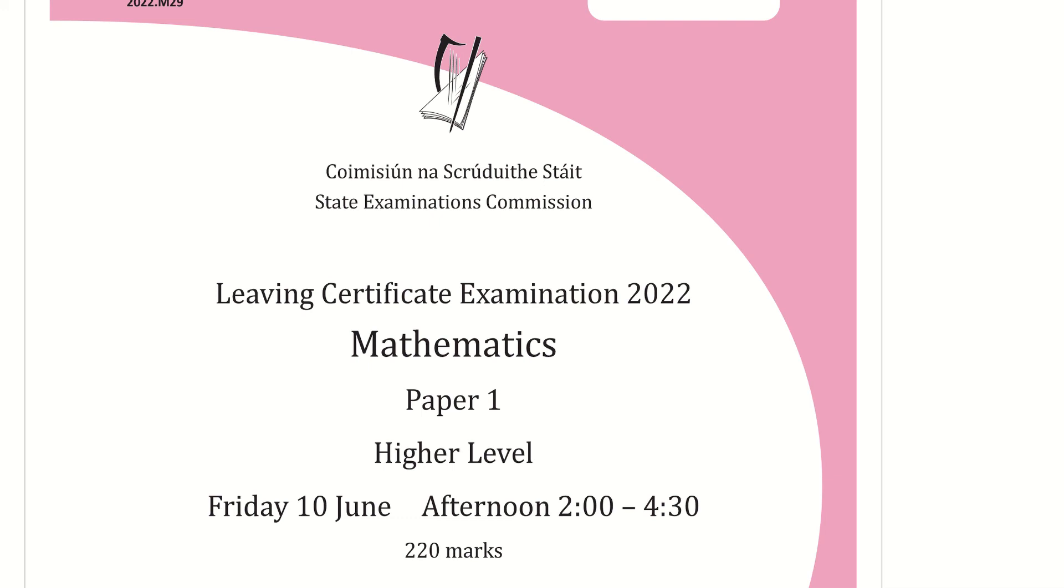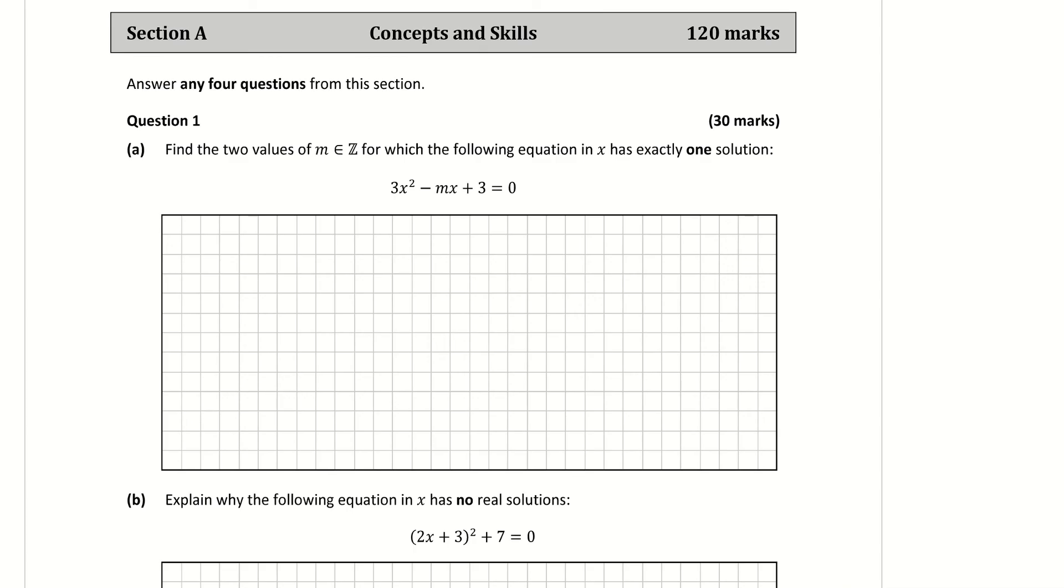These are the solutions to the 2022 Leaving Cert Maths Paper 1 at higher level. Question 1a: Find the two values of m, an element of the integers, for which the following equation in x has exactly one solution.